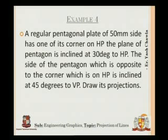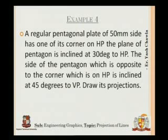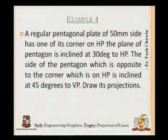The fourth example for today: a regular pentagonal plate of 50 mm side has one of its corners on HP. The plane of the pentagon is inclined at 30 degrees to HP. The side of the pentagon which is opposite to the corner on HP is inclined at 45 degrees to VP. Draw its projections.